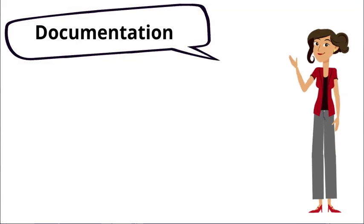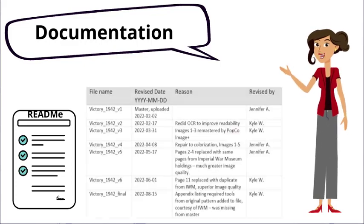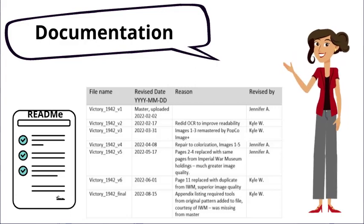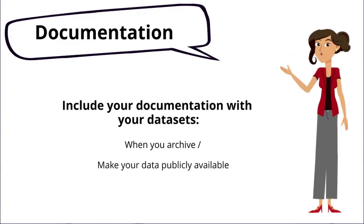Make sure to document your folder, file structure, and naming strategy in a readme file. You should also include a version history log that explains what was changed with each new version that was created, who made the change, and why it was necessary. All of this documentation should be included with your datasets when you archive and or make your data publicly available at the end of the project.